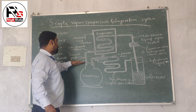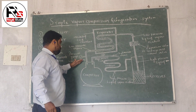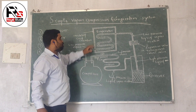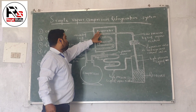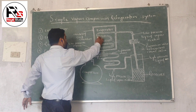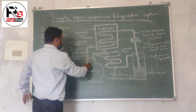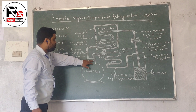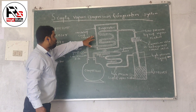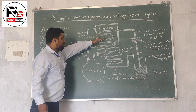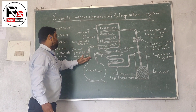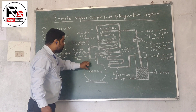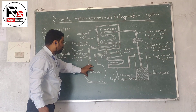In the refrigerator, there is a compressor inlet. The low pressure, low temperature refrigerant comes to the compressor inlet at point A, and this is the compressor outlet at point B. When the low pressure temperature refrigerant from the evaporator comes to the compressor at A, the compressor compresses the low pressure temperature vapor refrigerant.